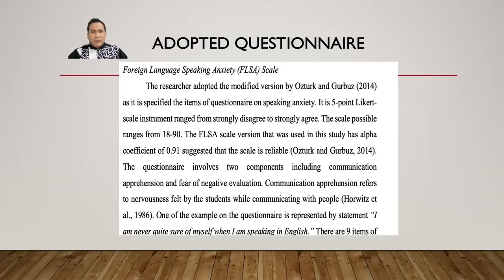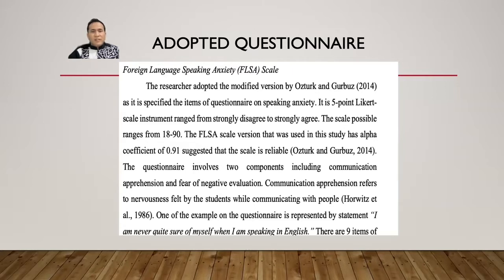You also have to explain further about the contents of the questionnaire — for example, that it is a five-point Likert scale instrument ranging from strongly disagree to strongly agree. You also explain the components of the questionnaire, such as 'the questionnaire involves two components including communication apprehension and fear of negative evaluation.' This is the narrative explanation required in chapter three when you adopt from others.